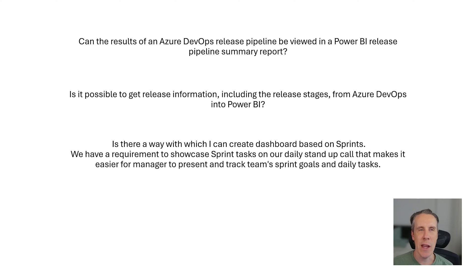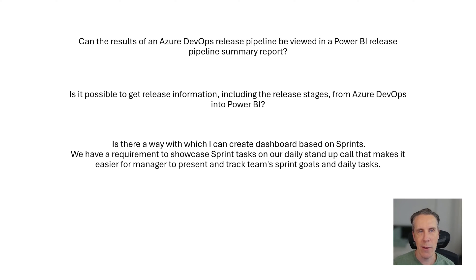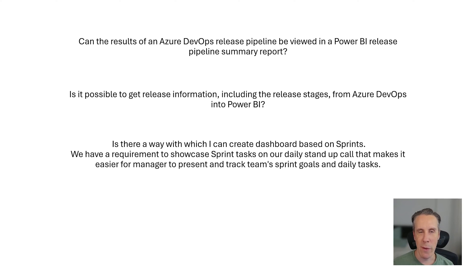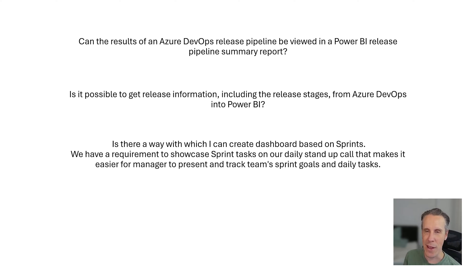Hi there friends, welcome back to another video on Paying It Forward. I have some more questions from the community that I'm going to cover in this video, so let's just get straight into it. There are a couple of questions here that are all very much related to the Azure DevOps API — how you can get information in there. The first one is how can I get the results of the release pipeline to be viewed in Power BI, the second is about release stages, and the third is about sprints — is there an ability to view work items across sprints? So the first thing we'll do is quickly have a look at the API reference and then we'll go into actually getting these together.